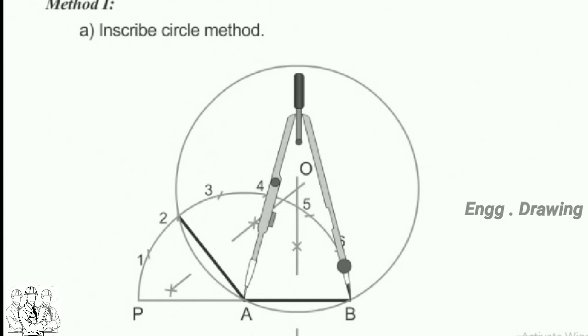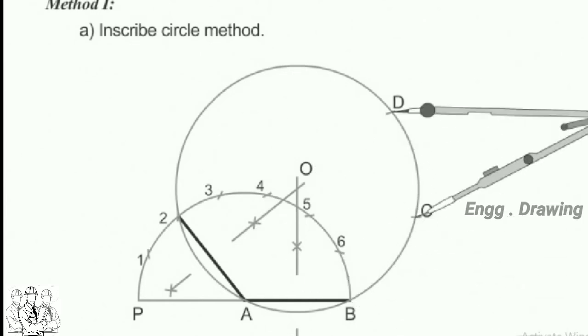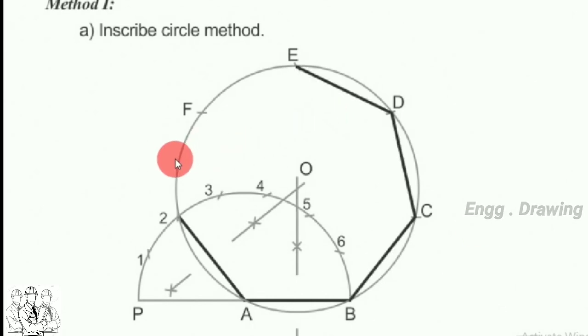With radius AB and starting from B, cut the circle at points C, D, etc. Draw lines BC, CD, etc. thus completing the required heptagon.